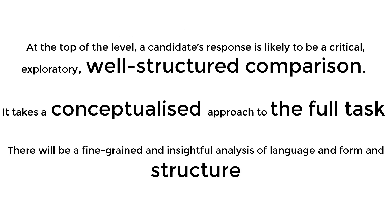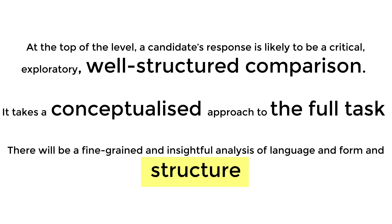Writing about the endings also guarantees level 6 for AO1 if you do it well. For example, the exam criteria says you need a well-structured comparison — you can definitely argue that it's not well-structured if it doesn't include the endings of the poems. More importantly, there's the word conceptualised: what is a concept? It is an idea that makes sense from beginning to end — you have to deal with the ending. And then there's the further clue: we want you to write about the full task, therefore the full poem. The final clue is that you have to write about language, form, and structure, and the ending is where the structure of the poem is most obvious and most clear. Four massive clues that you need to write about the end — those marks are just sitting there, waiting for you to scoop them up.